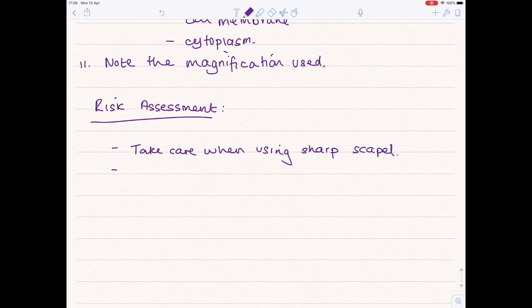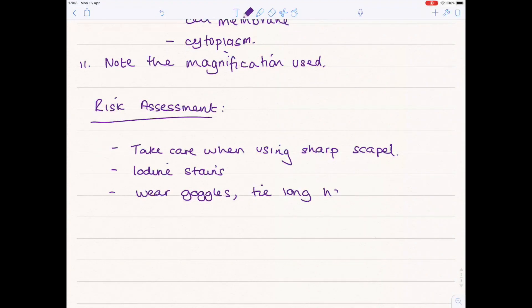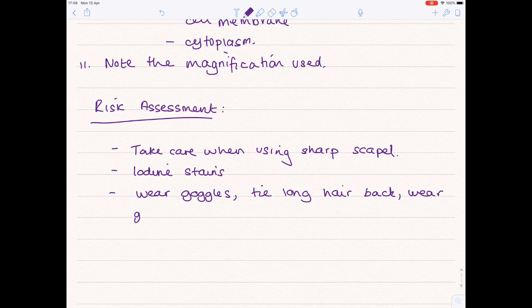Iodine is a stain, so make sure you don't get that on clothing. And obviously wear goggles. Tie long hair back. You might want to wear gloves to avoid staining your hands with the iodine. And lastly, be careful with the light being used in this light microscope. Don't make it too bright because that will damage the cells in your retina of your eyes.